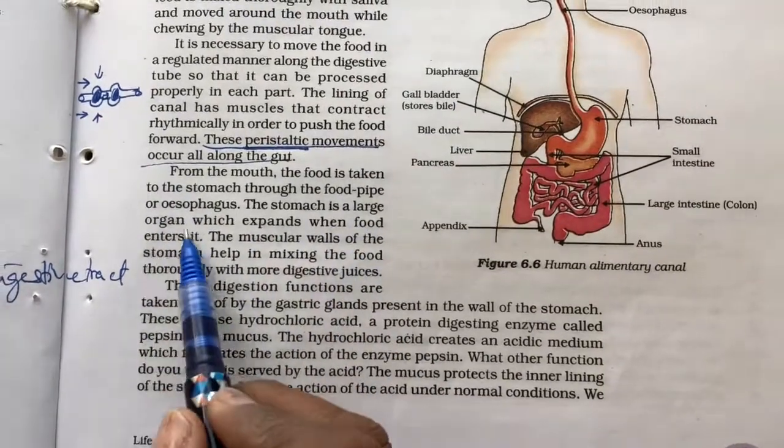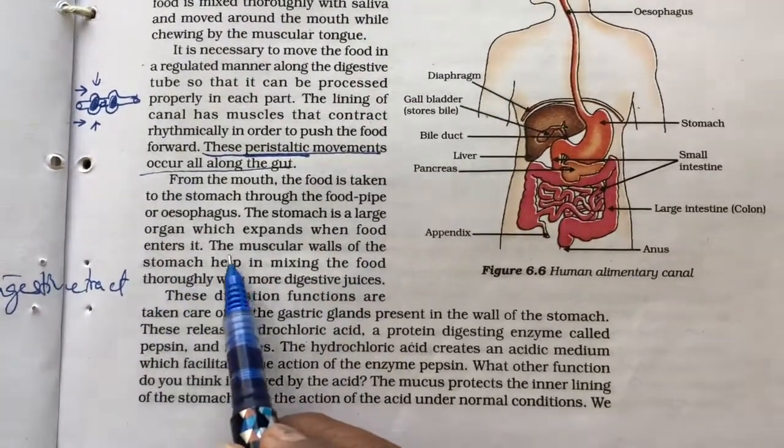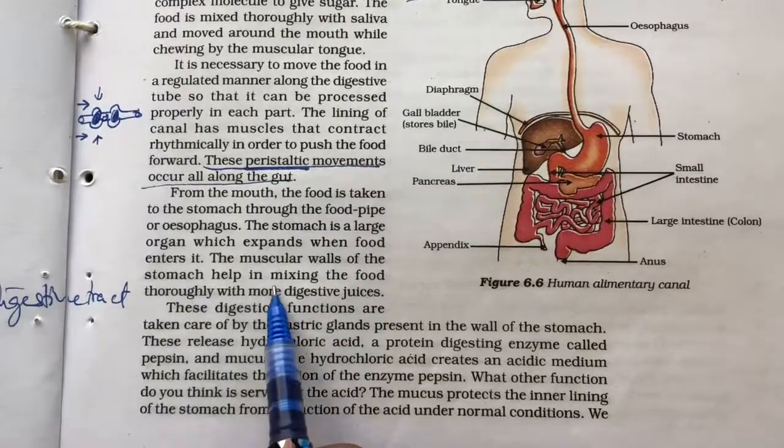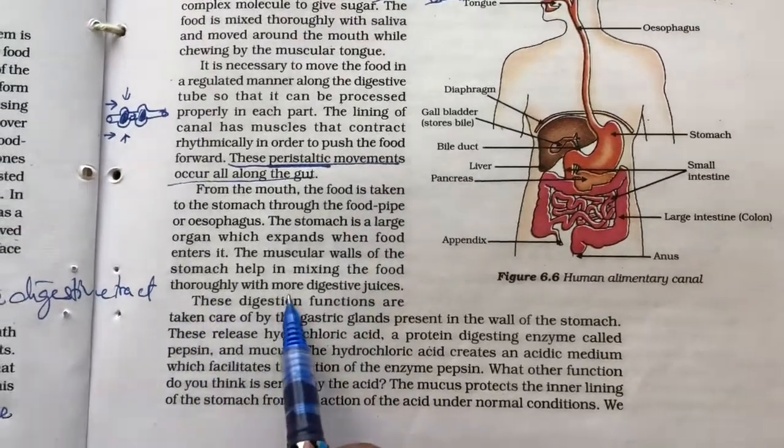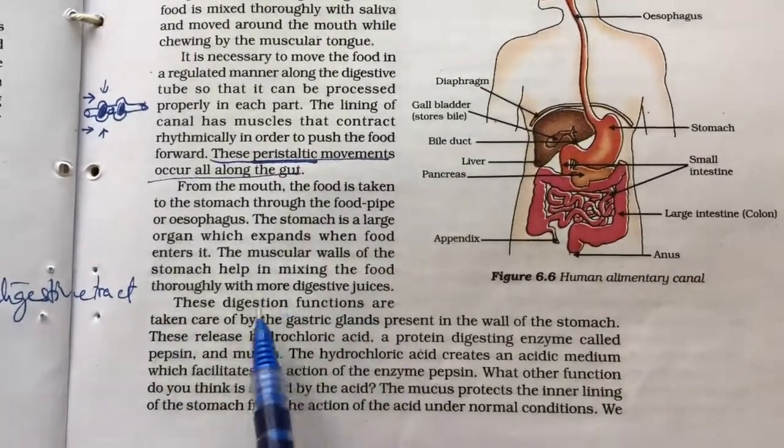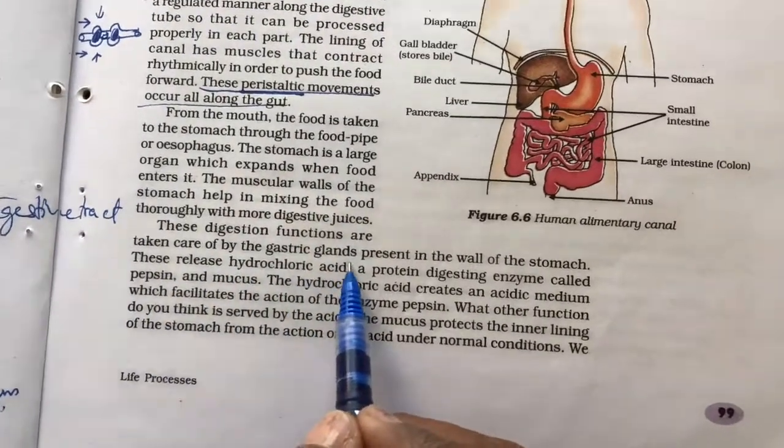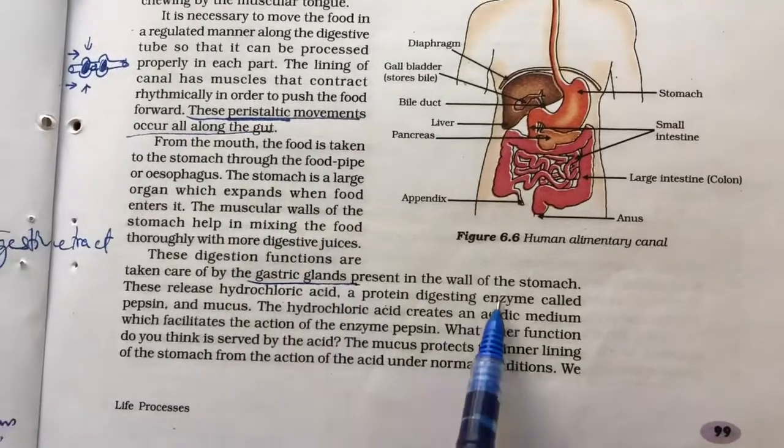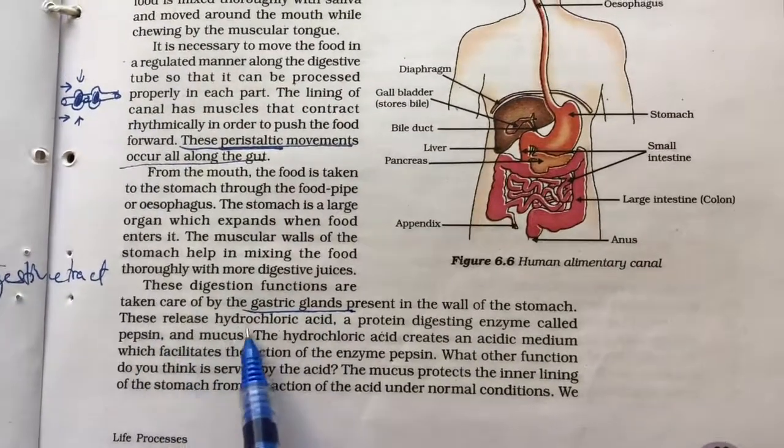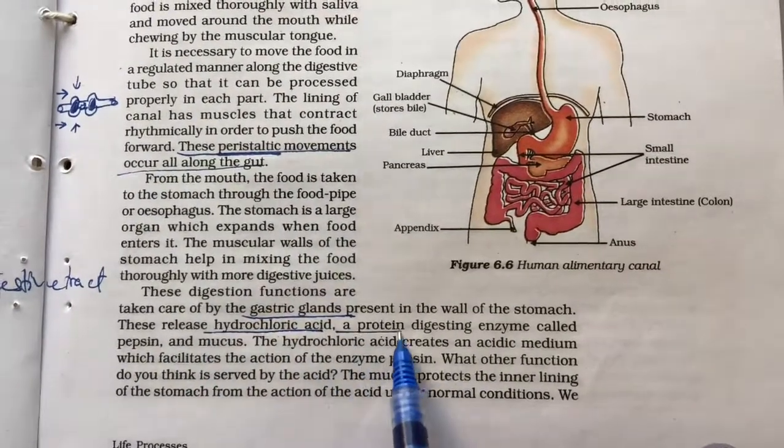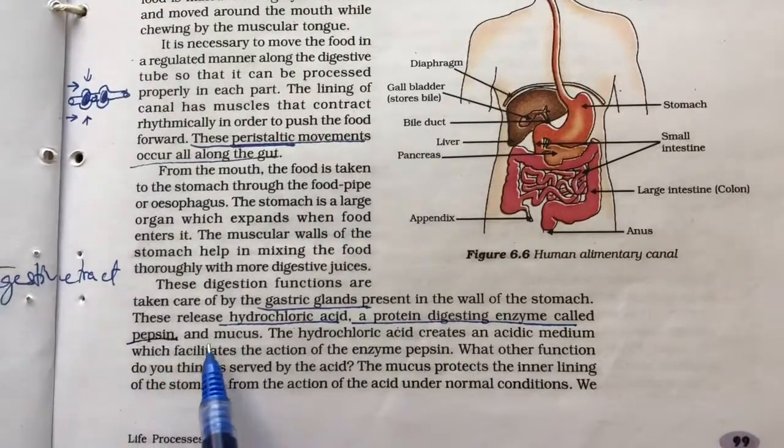The stomach is a large organ which expands when food enters it. The muscular walls of the stomach help in mixing the food thoroughly with more digestive juices. These digestion functions are taken care of by the gastric glands, gastric glands present in the wall of stomach. These release hydrochloric acid, a protein digestive enzyme called pepsin and mucus.